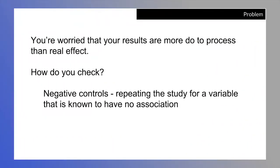So let's restate the problem. You're worried that your results are more due to process than a real effect. How do you check? There are a lot of ways, and many mechanisms of statistical significance are trying to check against that. They're evaluating your results relative to the uncertainty in your data. But what I'm about to present is a very practical solution, a more data sciencey way to think about it. The idea is to perform a negative control. You're basically going to repeat the study for a variable that is known to have no association.